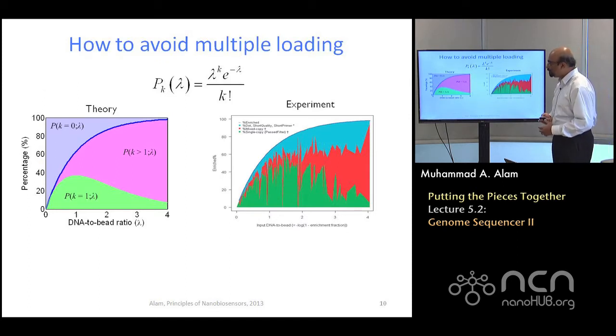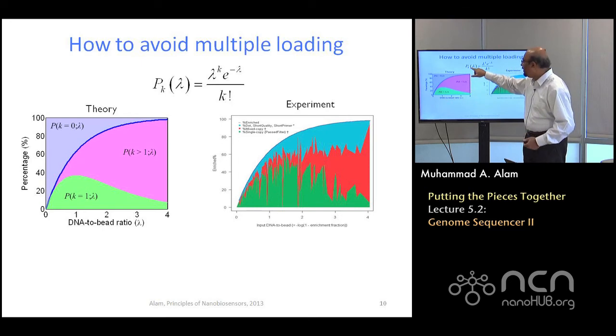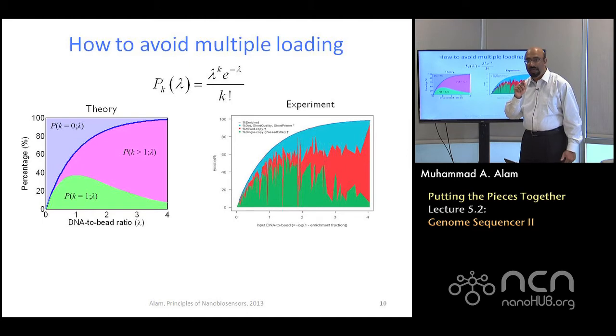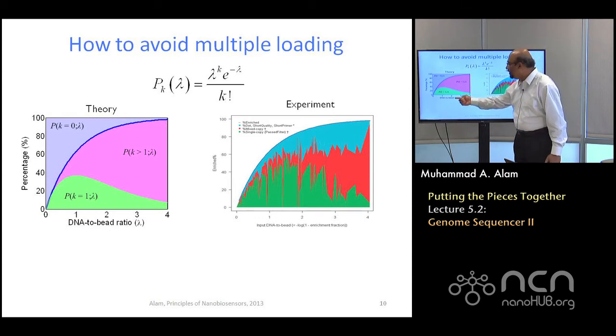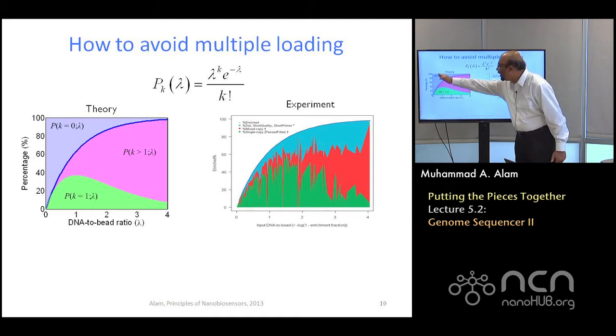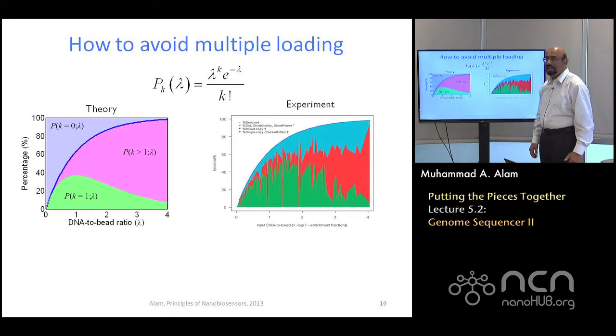This is how it works. Here I have plotted the Poisson formula for k equals 1, one DNA per bead. That is the green line. How did I get the green line? Essentially, I put k equals 1, and as a function of lambda, simply plotted this curve. Similarly, for k equals 2, you can have another curve, and for k equals 0, the curve not plotted here will essentially be exponential.